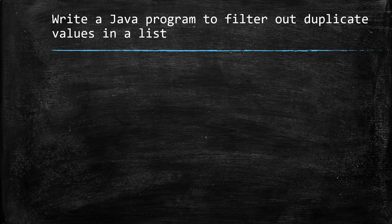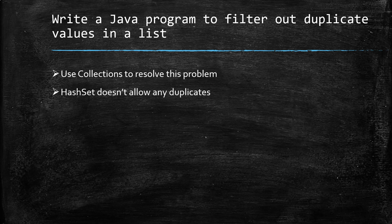The next question is a programming challenge: write a Java program to filter out duplicate values in a list. There are several ways to write this, such as iterating through all items and comparing each one, but that consumes a lot of time and code. You need to think of an efficient way considering space and time complexity. The best approach is to use a collection — specifically the HashSet collection, because HashSet doesn't allow any duplicates by default.